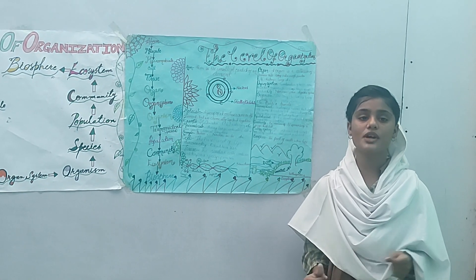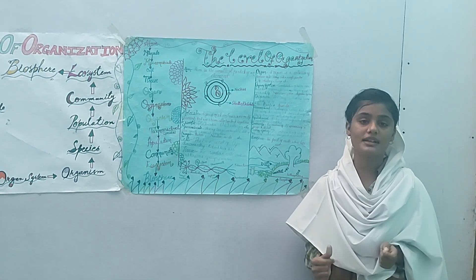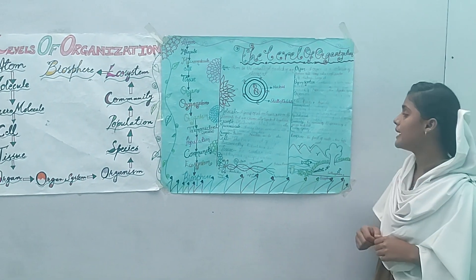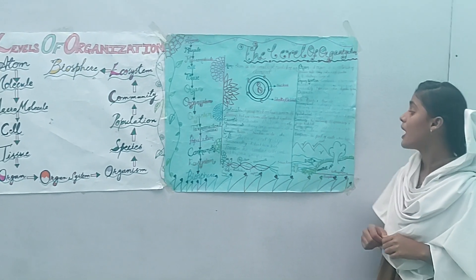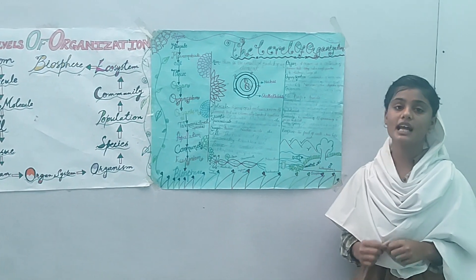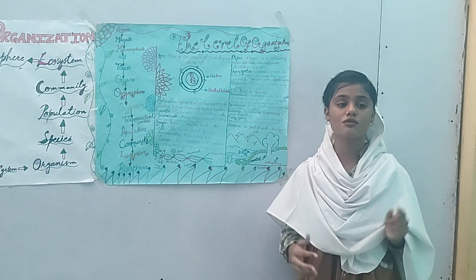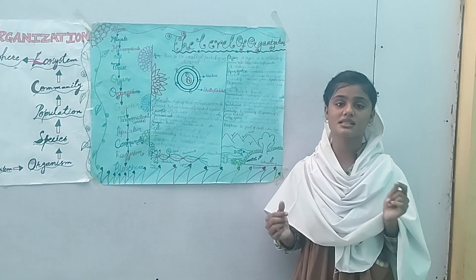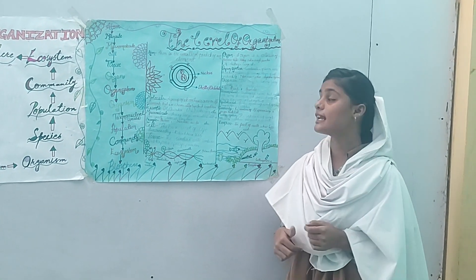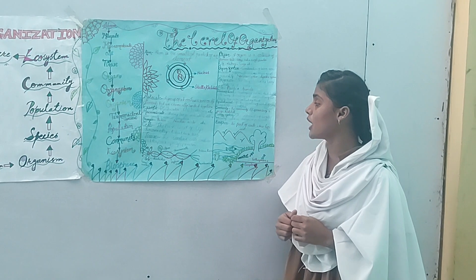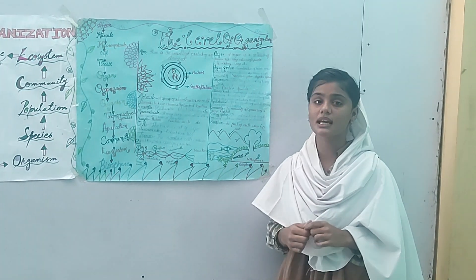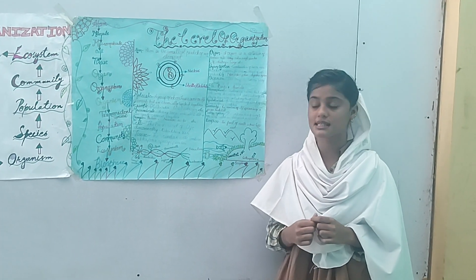What is a habitat? A place where organisms live is called a habitat. Ecosystem: the interaction of living and non-living things with their environment is called an ecosystem, also known as an ecological system.